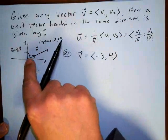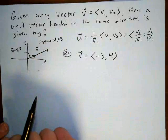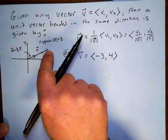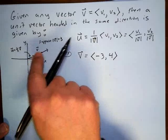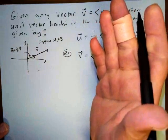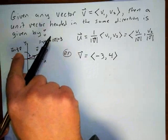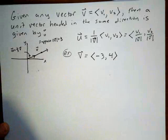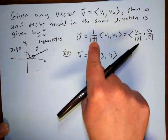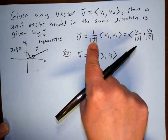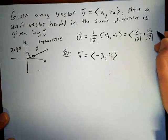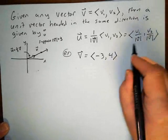Suppose vector v has a magnitude of 3. If I multiply v by one-third, that scales it down to one-third the length of v. Since v has length 3, one-third of that is 1 — so u = (1/3)v would be a unit vector with magnitude 1. In general, you take 1 over the magnitude of v as a scalar and multiply by the vector (v1, v2), giving (v1/|v|, v2/|v|), which is a unit vector.